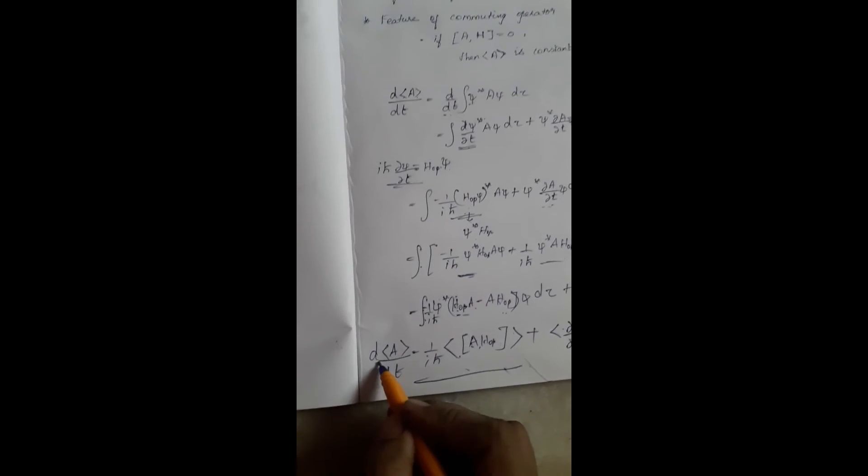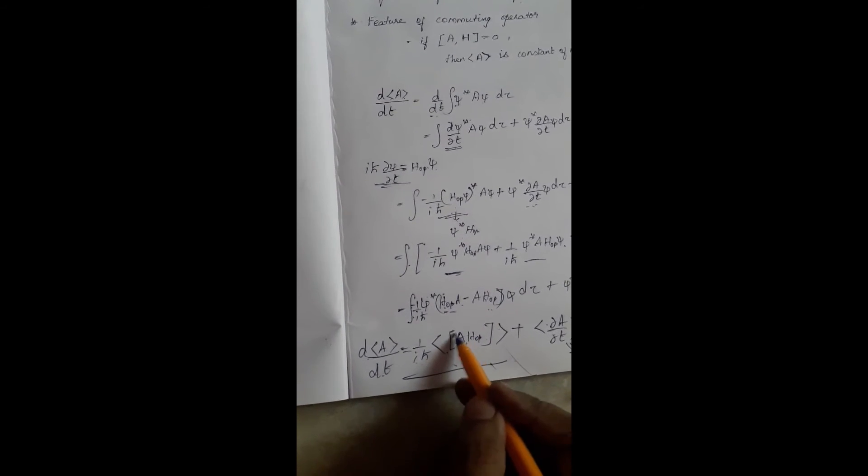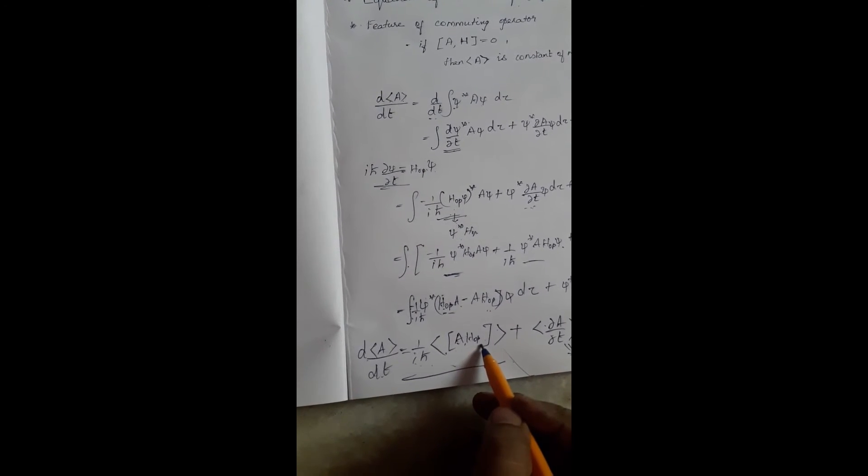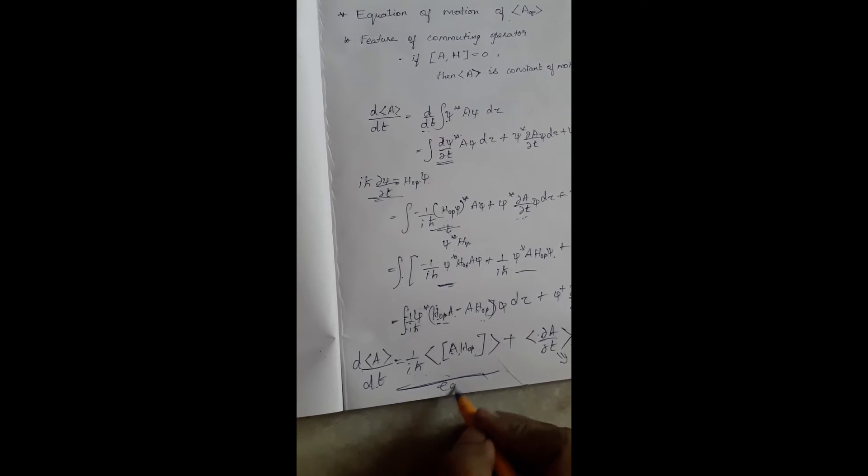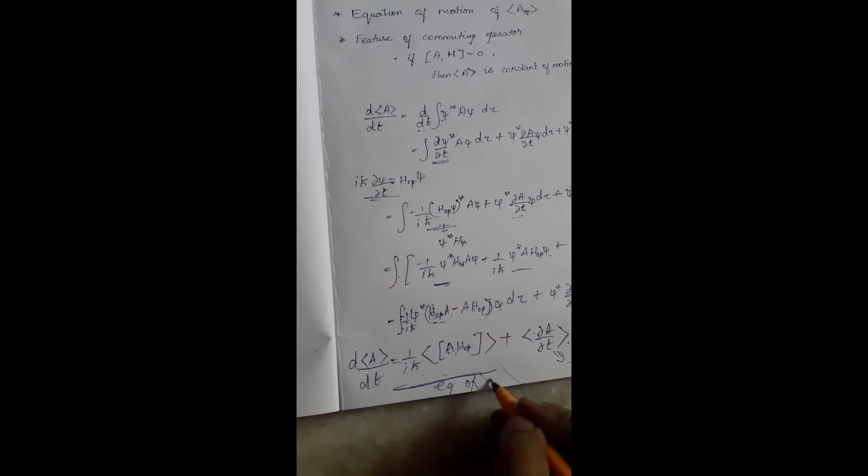So the expectation value d⟨A⟩/dt equals (1/iℏ) times the expectation value of the commutator [A, Ĥ], plus the expectation value of ∂A/∂t. If the operator A is not explicitly time dependent, the second term becomes zero, and we have d⟨A⟩/dt = (1/iℏ)⟨[A, Ĥ]⟩. This is the equation of motion of the expectation value of A.